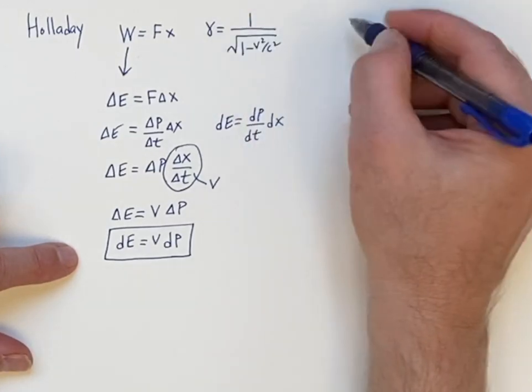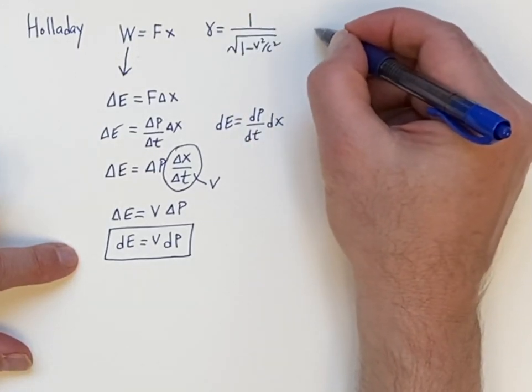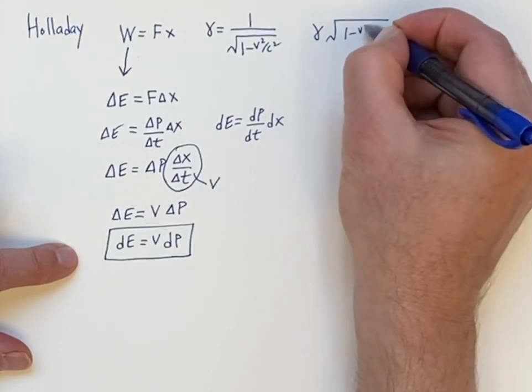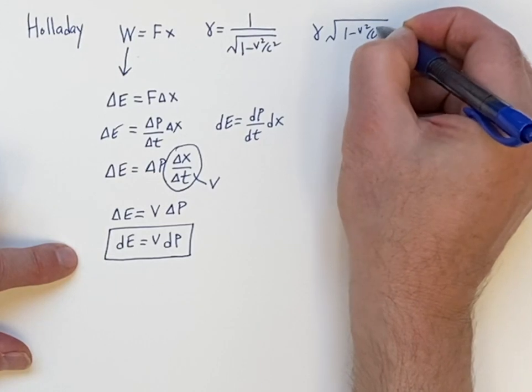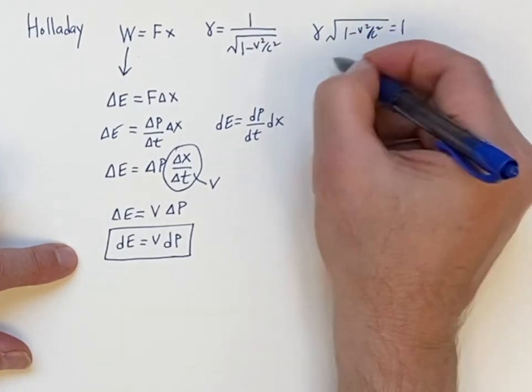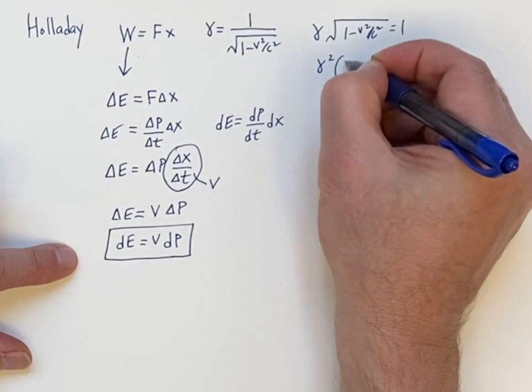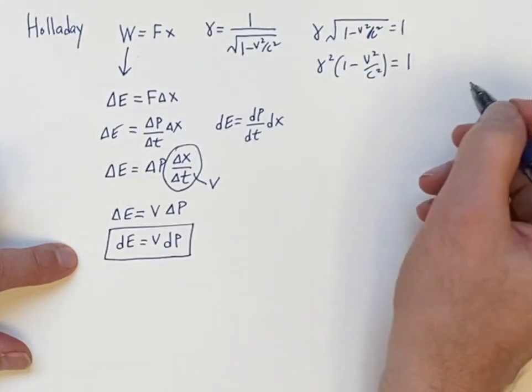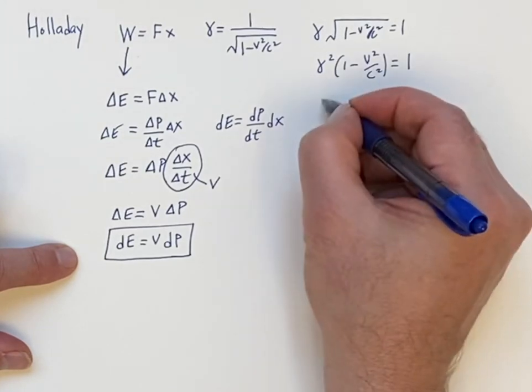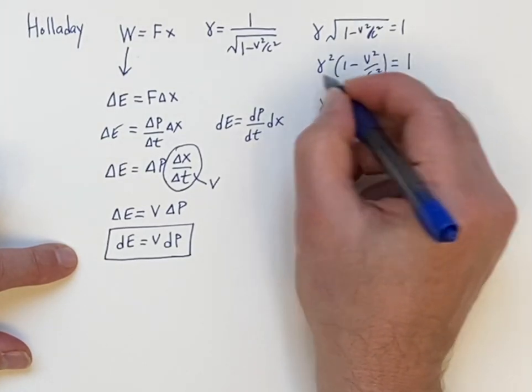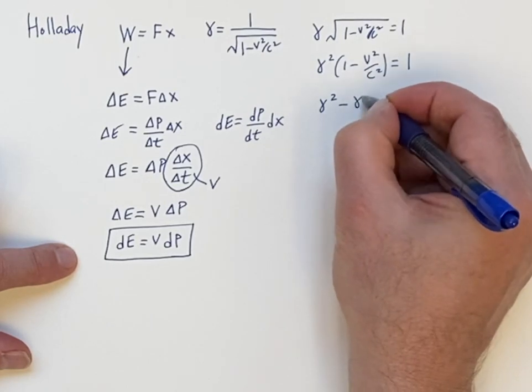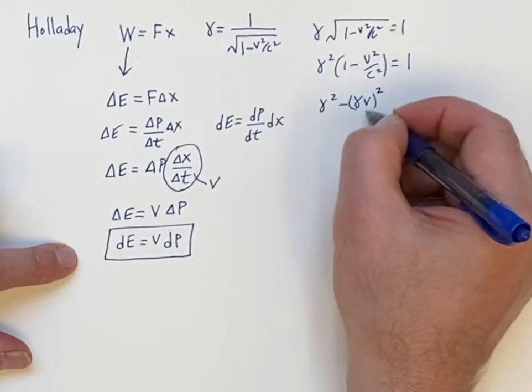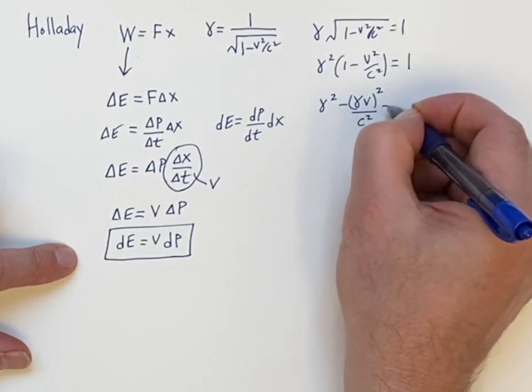The next part is to take the gamma and move this square root over to the left side. And then square both sides. Gamma squared, 1 minus V squared over C squared equals 1. And then use the distributive axiom to multiply in. And here, when the gamma hits the V, I'll put a square there, square both of them, over C squared, it's equal to 1.